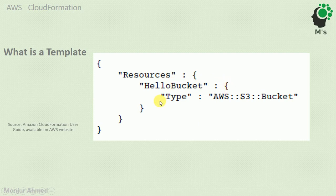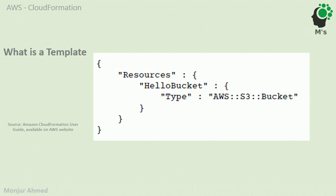This block belongs to the 'HelloBucket' part, and all together this part belongs to the Resources block — they all together make the whole document. If you look carefully, you'll see 'Resources' is a reserved keyword for AWS, meaning we are declaring a resource. We give the name 'HelloBucket' as our own defined name, and the type is AWS::S3::Bucket.